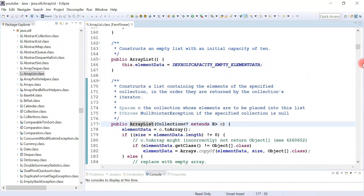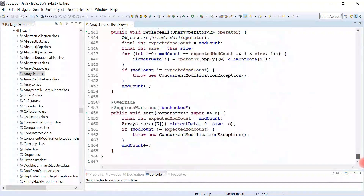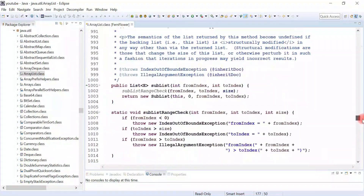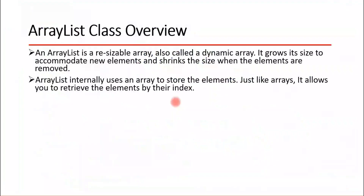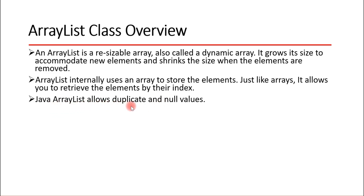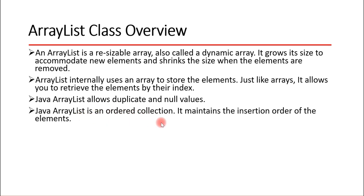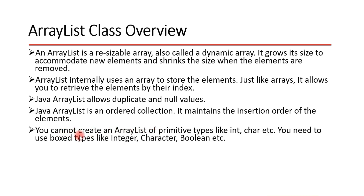ArrayList internally uses an array and uses indexes to represent elements, so ArrayList uses indexes to retrieve and add elements. ArrayList allows duplicate and null values, so we can store duplicate elements and null values. ArrayList is an ordered collection and maintains insertion order — whatever order we insert elements, they will be displayed in the same order.